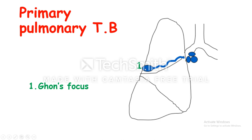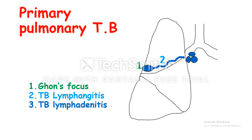This area will be drained, and the organisms — either free or inside the macrophage — will be drained through the lymphatics to the hilar lymph nodes. These lymphatics may get infected as well, and we call it tuberculous lymphangitis. When drained to the hilar lymph nodes, the lymph nodes get enlarged and inflamed, and we call it tuberculous lymphadenitis. So in primary pulmonary tuberculosis we will see: Ghon focus, tuberculous lymphangitis, and tuberculous lymphadenitis.